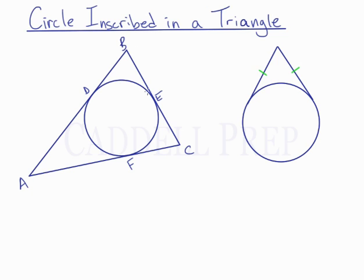What does happen is these two tangent lines are congruent to each other. So we have that this line segment, which is a tangent line, is congruent to this one. And this line segment is congruent to this line segment, so AD is congruent to AF, and FC is congruent to EC.